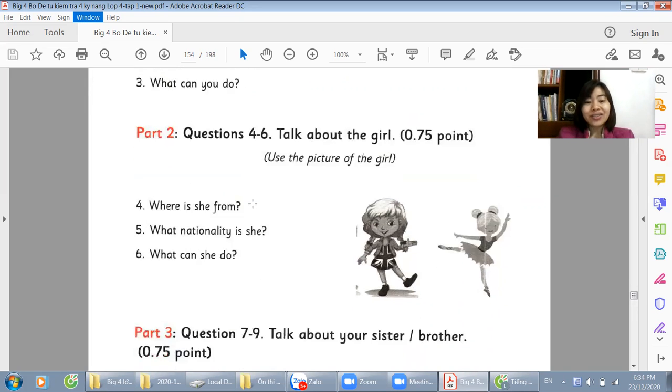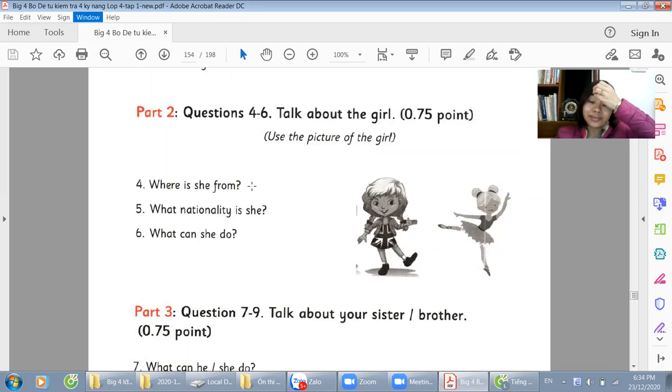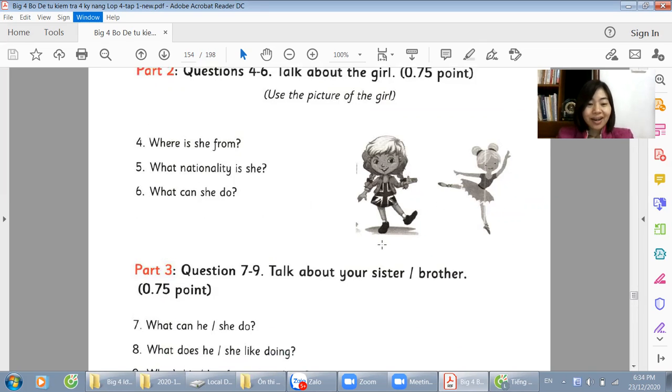Part 2. We talk about this girl. You can provide information related to the picture here. For example, where is she from? Look at the dress she's wearing. You can see that's the flag of England. So we can say she is from England. So with England, her nationality will be English. She is English. And we can see she is dancing. She is dancing. And so the answer will be she can dance. That's all.